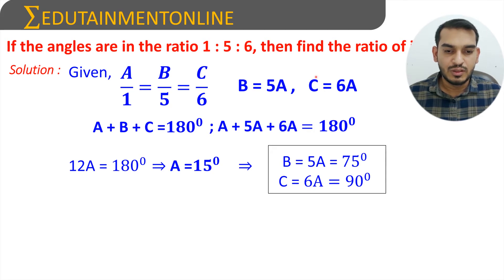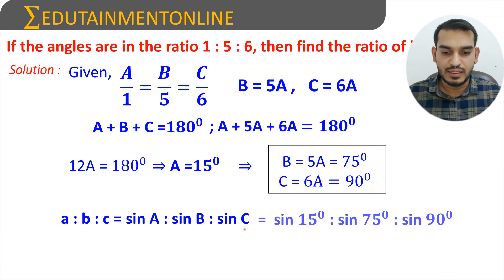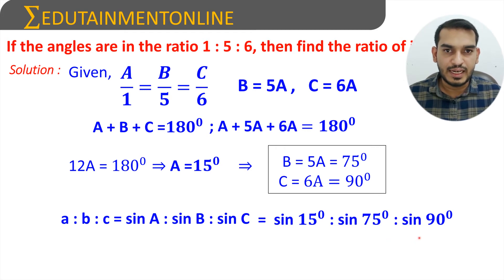To find the ratio of the sides, we use the sine rule: a:b:c = sin A : sin B : sin C. So the ratio is sin 15° : sin 75° : sin 90°. We know sin 90° = 1, and we need to find sin 15° and sin 75°.